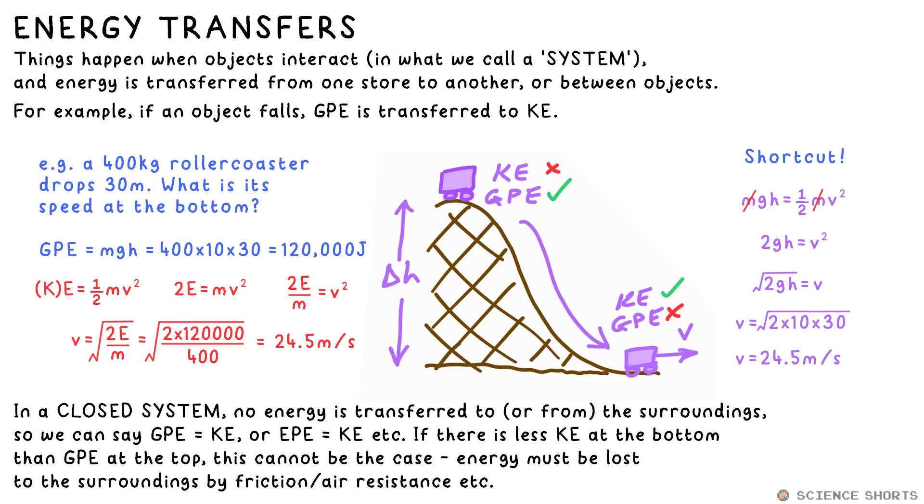You could get a situation where, for example, the roller coaster has more GPE at the top than kinetic energy at the bottom. Where's the rest of the energy gone, you might ask? Well it must have been lost to the surroundings, so that means it cannot be a closed system. This could be due to work done against air resistance or friction. Work is just another word for energy used, by the way.